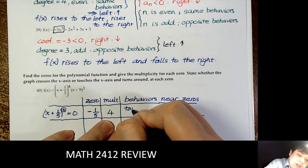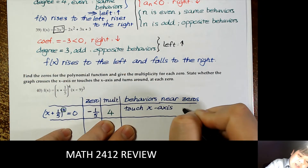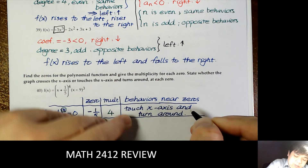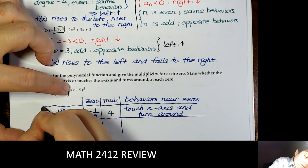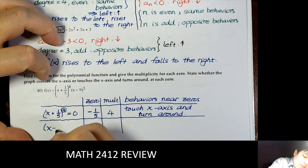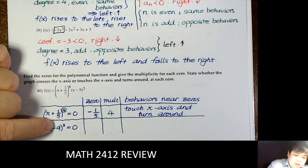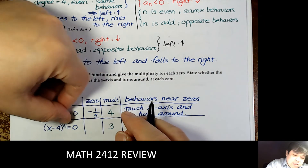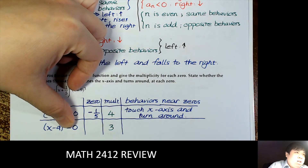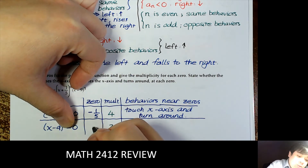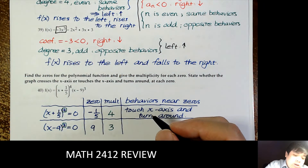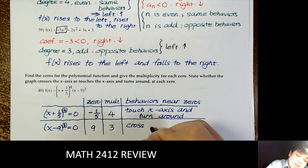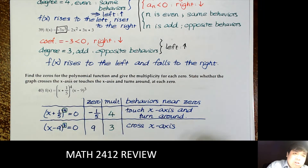For the other factor, the power of the factor is the multiplicity. Solving x minus 9 equals 0 gives x equals 9. The multiplicity is 3, which is odd, so the graph crosses the x-axis at that zero.